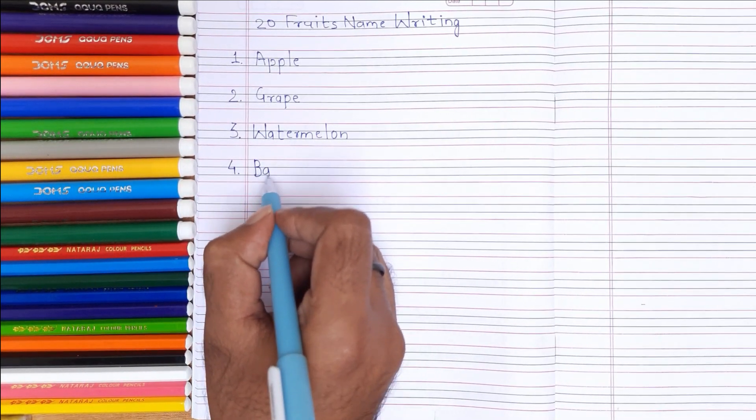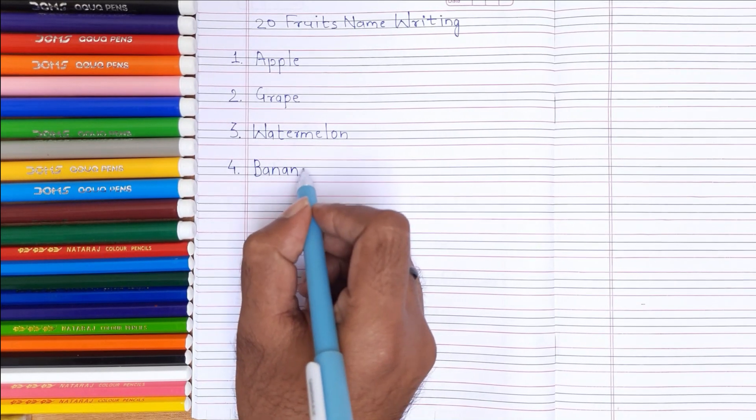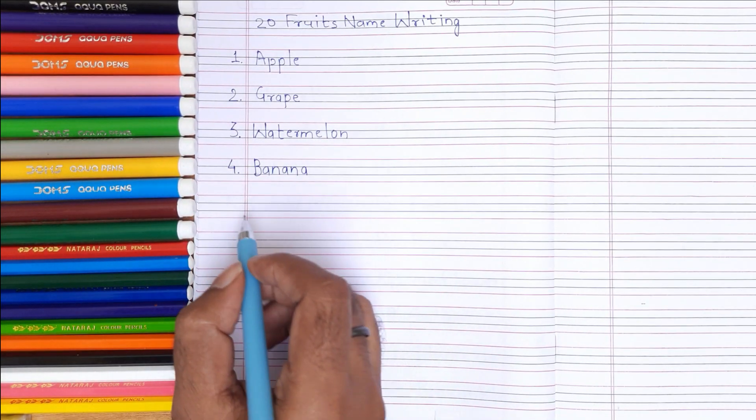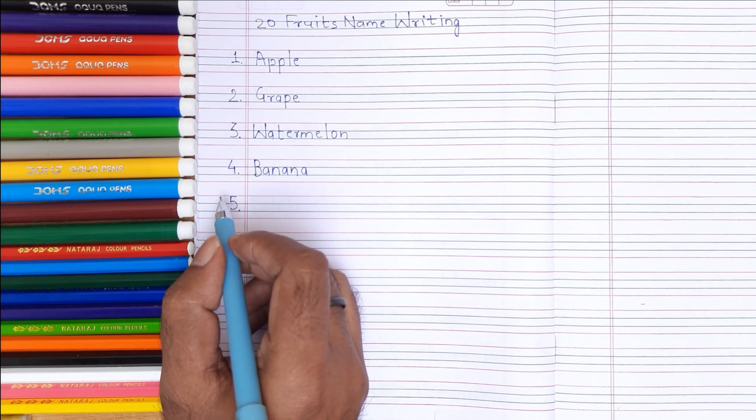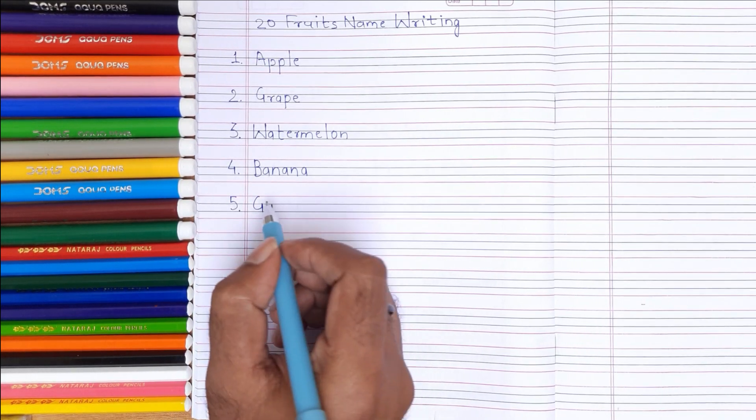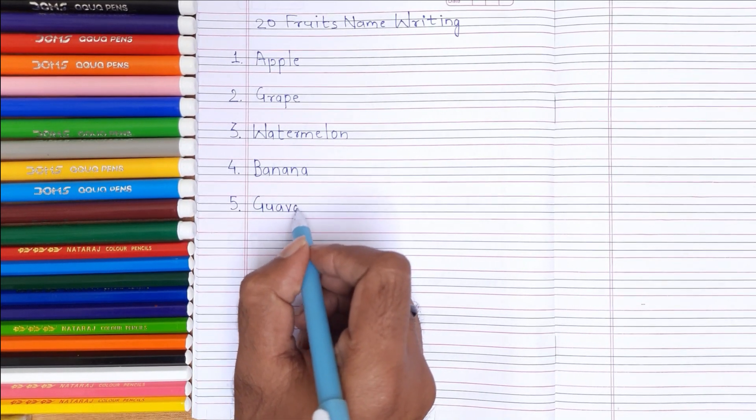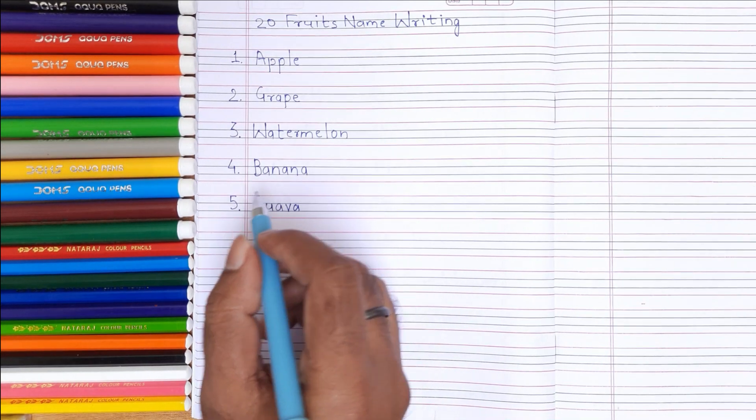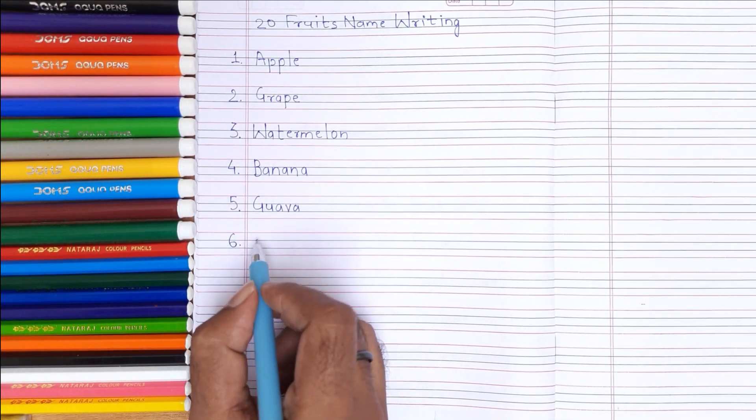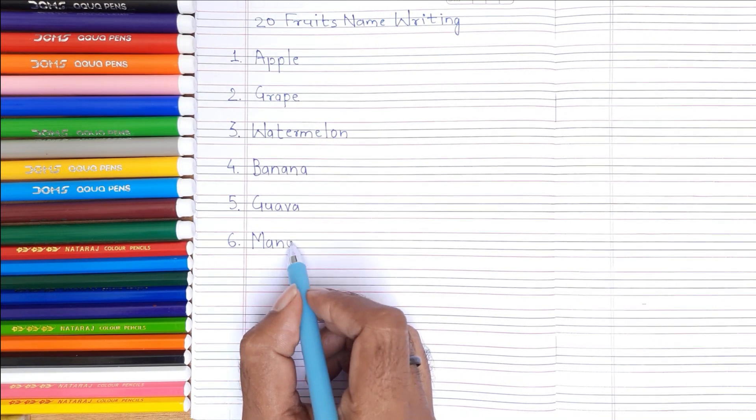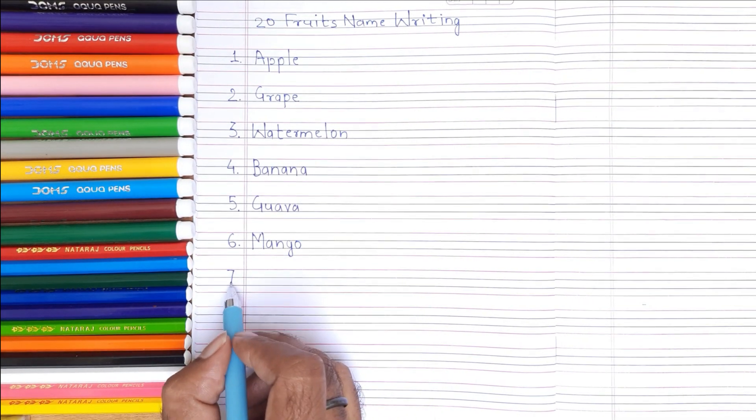4. B-A-N-A-N-A Banana. 5. G-U-A-V-A Guava. 6. M-A-N-G-O Mango.